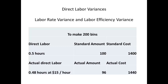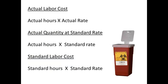Now we take a look at the labour figures. The standard cost would have been 100 hours at a cost of $1,400. The actual time was 96 hours at a cost of $1,440. To make comparisons here, we use actual labour cost, which refers to the actual hours worked multiplied by the actual rate paid. The actual quantity at the standard rate will be the actual hours worked multiplied by the standard rate. Finally, the standard labour cost will be standard hours multiplied by the standard rate.